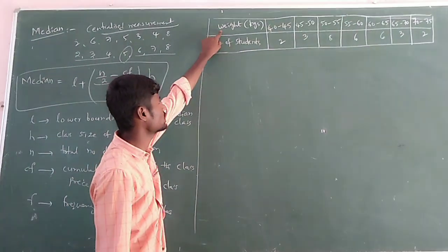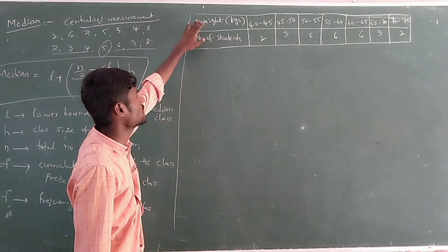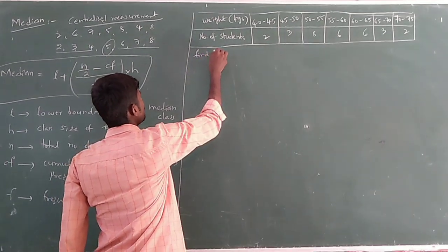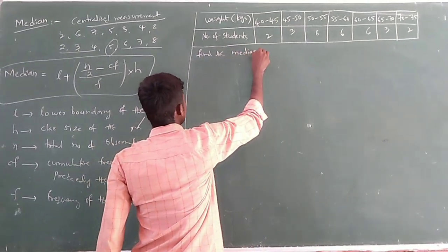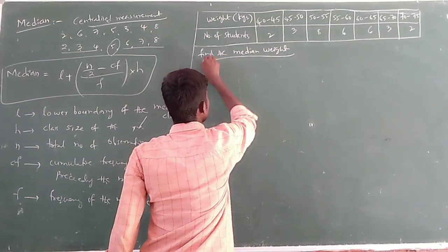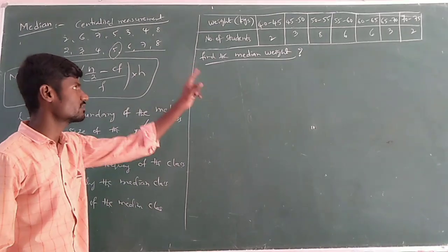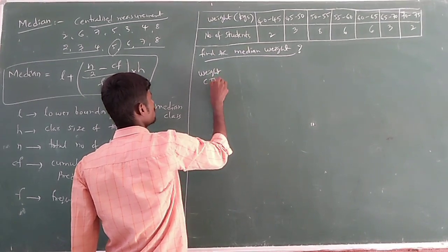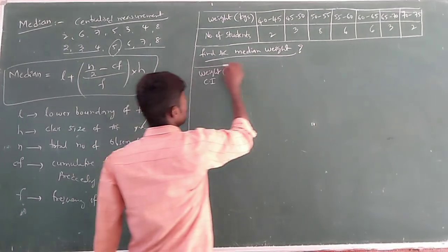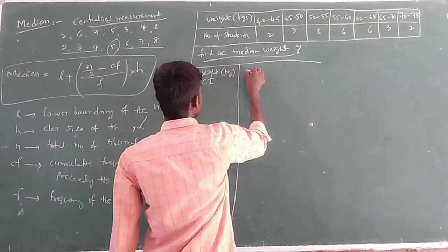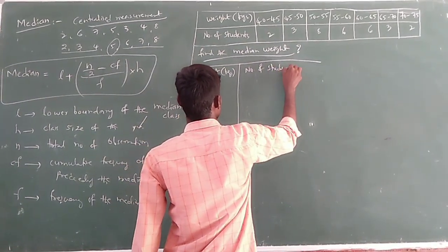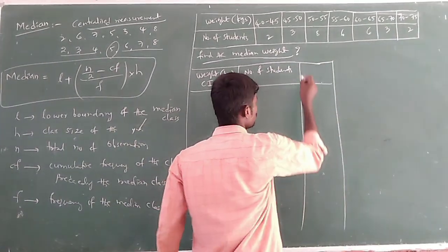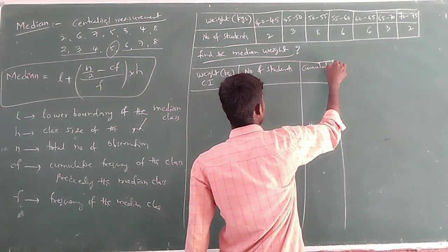Let us consider a problem: number of students and their weights given in a range. We are asked to find the median weight. So we will take class intervals in kilograms and number of students — nothing but frequency. We will also need an extra column for this median calculation, that is the cumulative frequencies column.